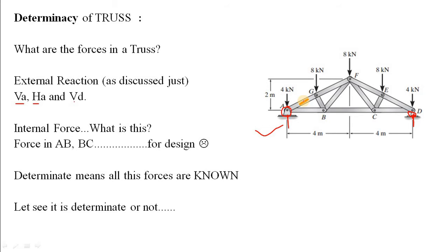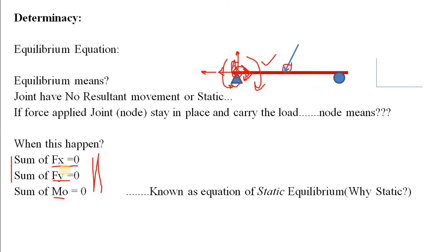You design the truss based on these axial forces. Counting the members: 1, 2, 3, 4, 5, 6, 7, 8, 9, 10, 11 — there are 11 internal forces to find. So for this truss, there are 3 external reactions and 11 internal forces, making a total of 14 unknown forces. To say this truss is determinate, you must be able to find all 14 of these unknowns.